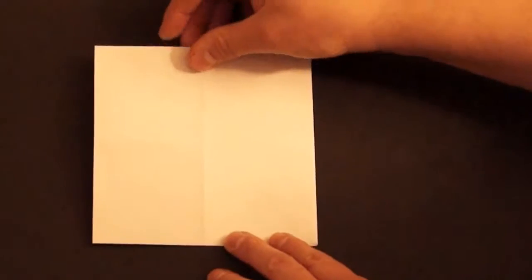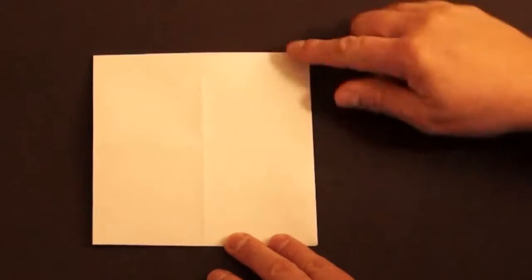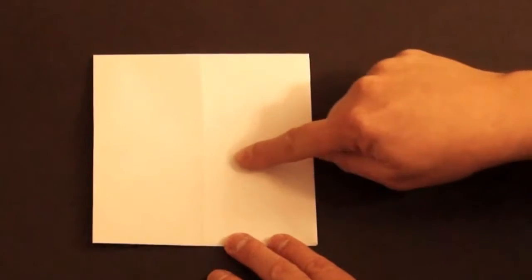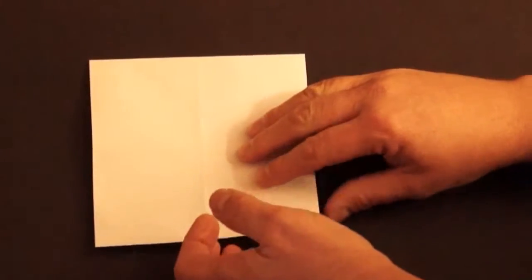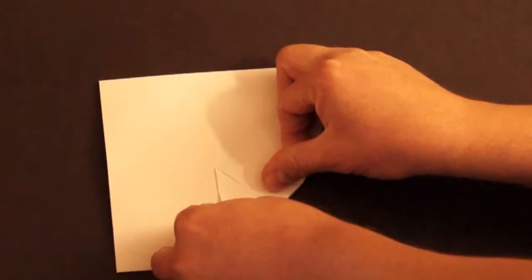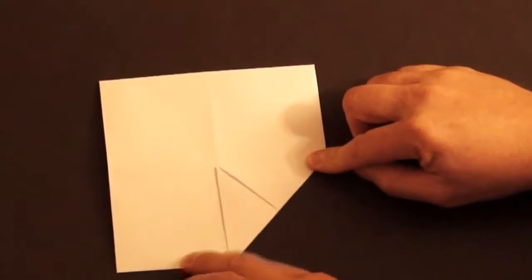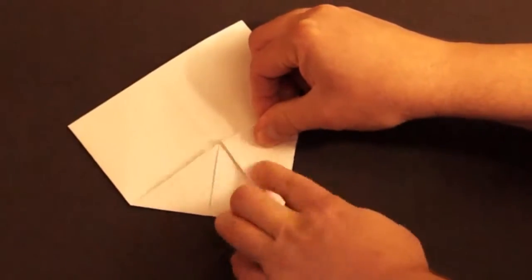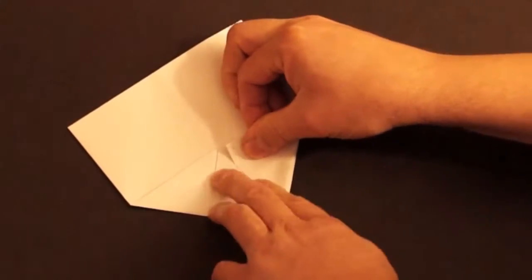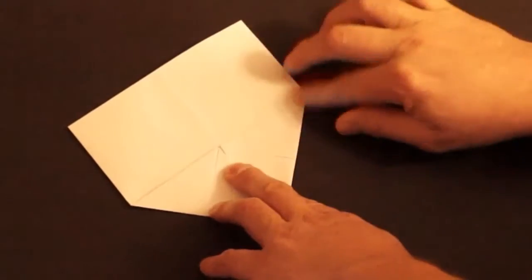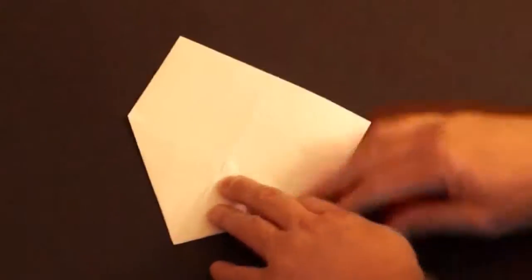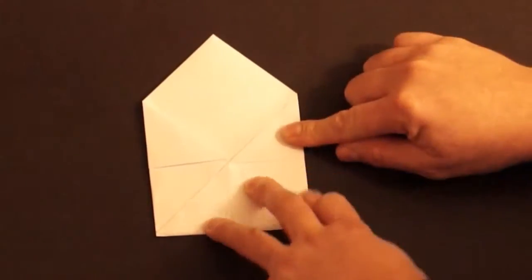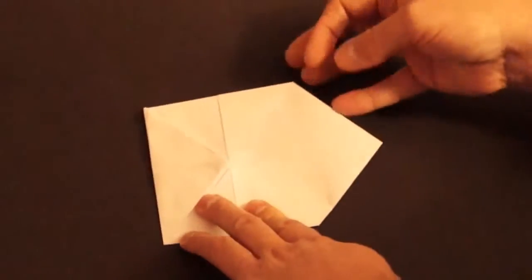Turn it on the back. Fold all four corners to the middle. The middle is where the creases intersect. Press down good on your folds.